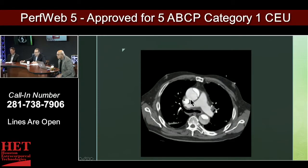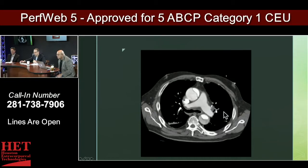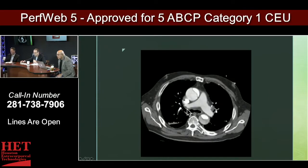If you think about the aorta as a candy cane, this is the tip — coming out towards you off the screen, curving around the arch, and then back down along the vertebra into the abdomen. Right lung, left lung. Next to the aorta on the patient's right side is going to be the superior vena cava. This is the area that you're dissecting around when putting in an LV vent and such.